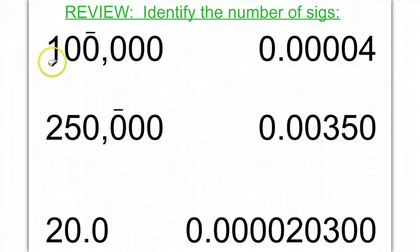For example, this number has three significant figures from the 1 to the 0 with a line over it. This number has four significant figures. This number has three significant figures. This number has one significant figure. This number has three because leading zeros are never significant. And this number has five.